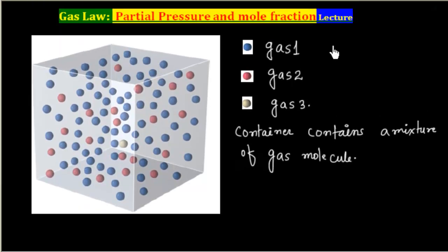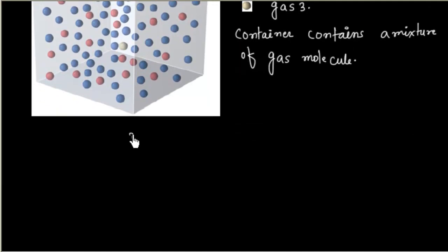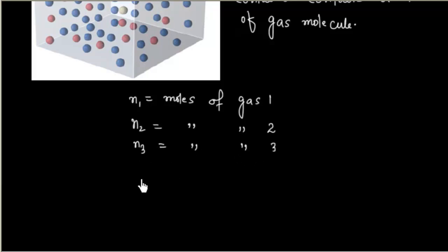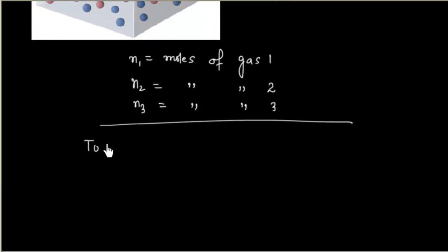Now let us say moles of gas 1 is N1. Similarly I have N2, that is moles of gas 2. And let us say N3, that is moles of gas 3. Similarly we can have more number of moles. So we can define total number of moles. Total moles equals N1 plus N2 plus N3.